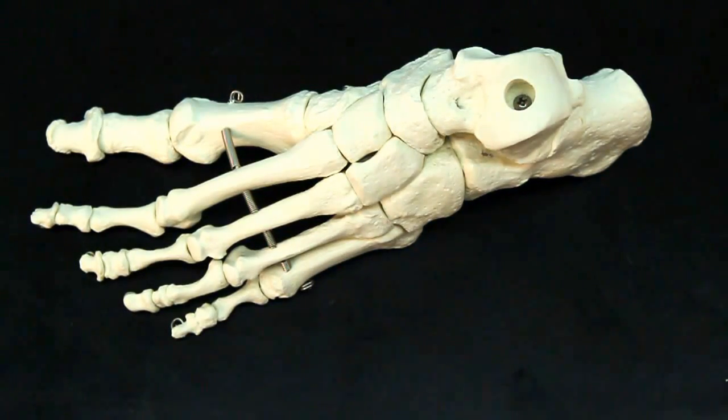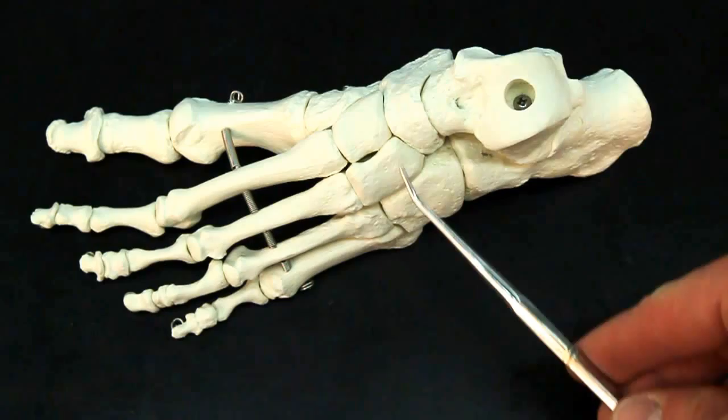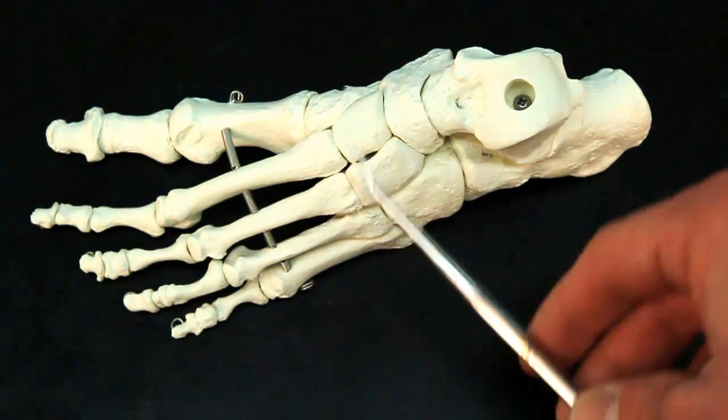And here we have our foot. Now the foot is going to have seven tarsal bones located for the ankle.